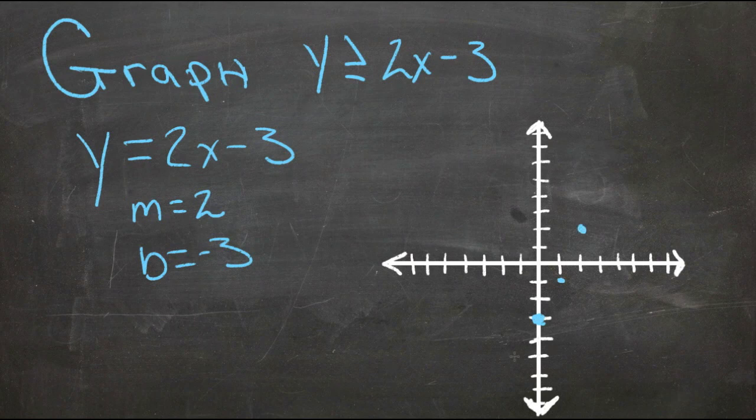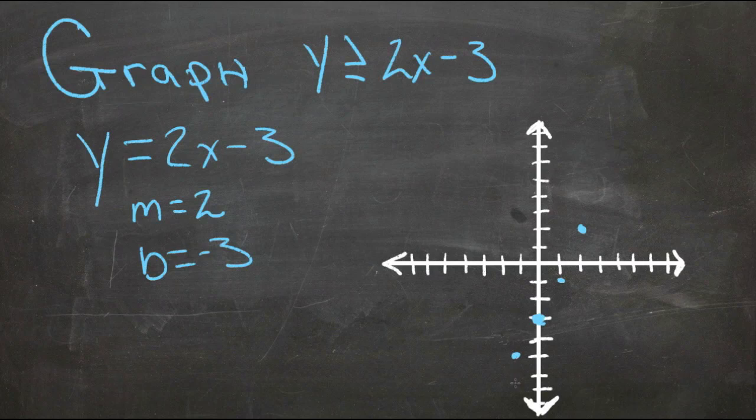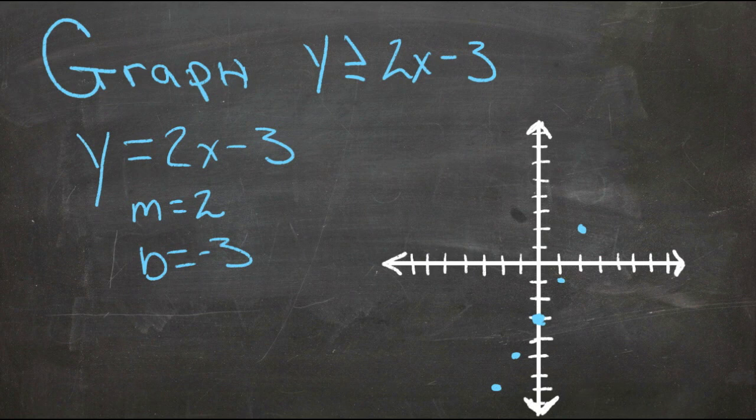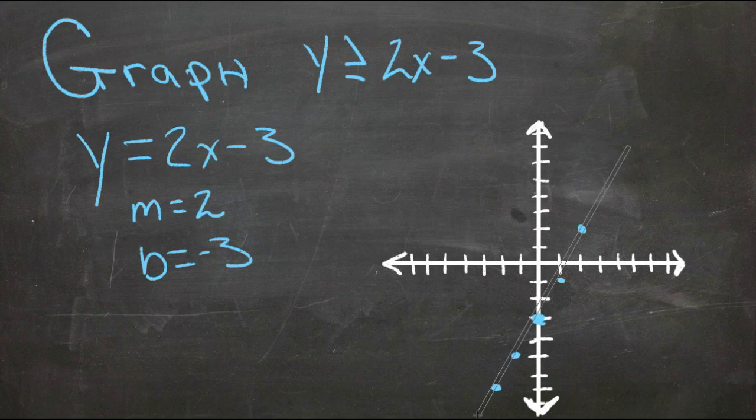Or drop 2 to go back 1. So we can see that the line would be right there. Let's draw that line in. So the line y equals 2x minus 3 is right there.